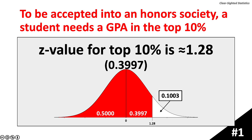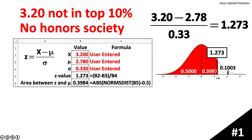This chart illustrates the area in detail for a z-value of 1.28. A student with a 3.20 GPA is not in the top 10% and will not be admitted to the honors society. The calculated z-value is 1.273, as shown using the formula and confirmed using Microsoft Excel. Excel precisely calculates the probability for any z-value. A z-value of 1.273 has a probability of 39.84%, placing this student in the top 10.16%, which is not good enough to make the honors society.